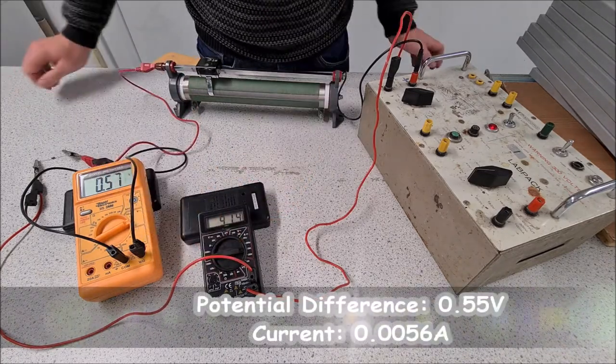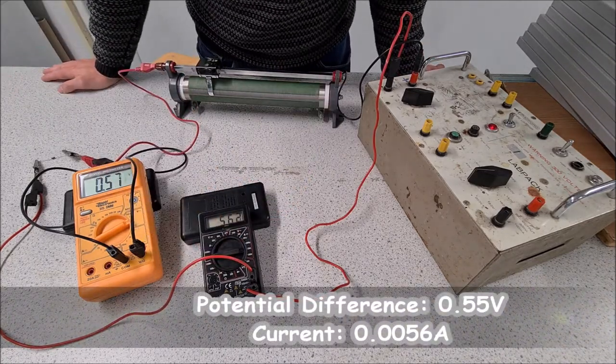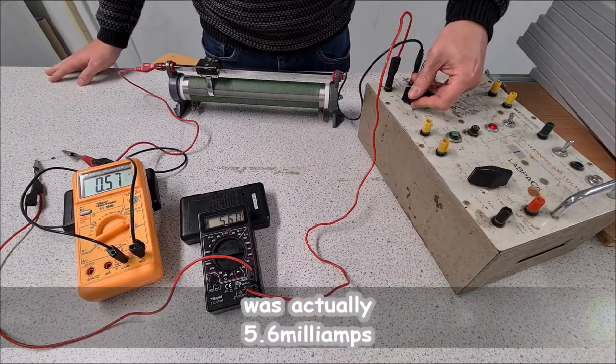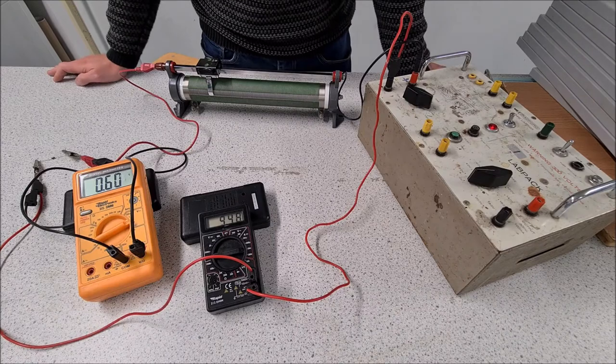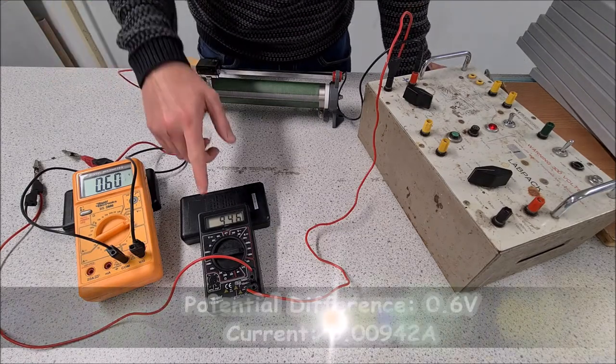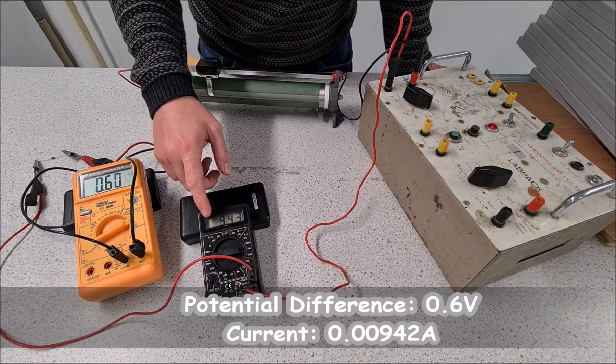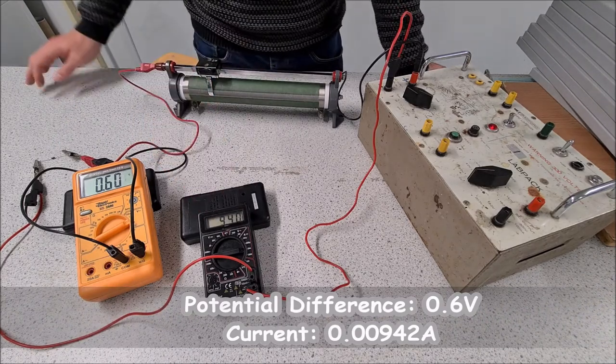And look, we'll just get one more, just to see what happens. So with a potential difference of 0.6 volts, the current has gone up to 9.42 amps.